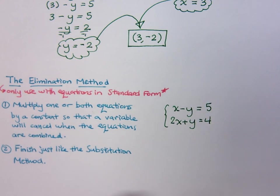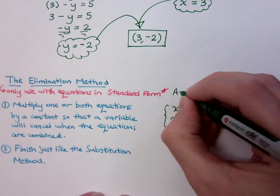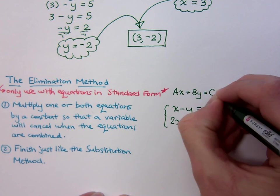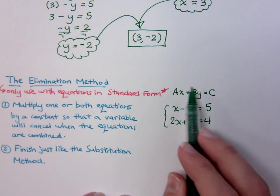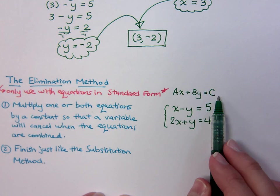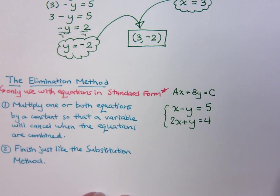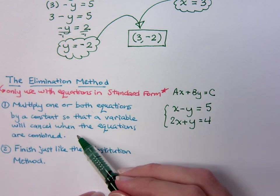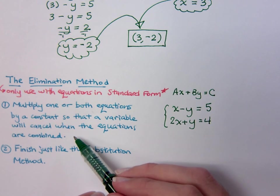And remember that standard form looks something like this. Ax plus By equals C. That is our standard form. You've got both the variable terms on the left and the constant term on the right. If it's in standard form, this is some of the easiest stuff that we do. It says multiply one or both equations by a constant so that the variable will cancel when the equations are combined.